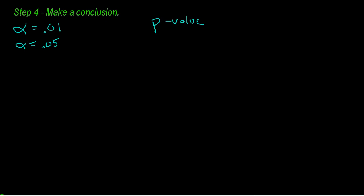Now we have to make a conclusion. You compare your p-value to your level of significance, the alpha level. Typical levels of significance are 1%, which is very significant, or 0.05 which is 5% significant. Our p-value was 0.0461.